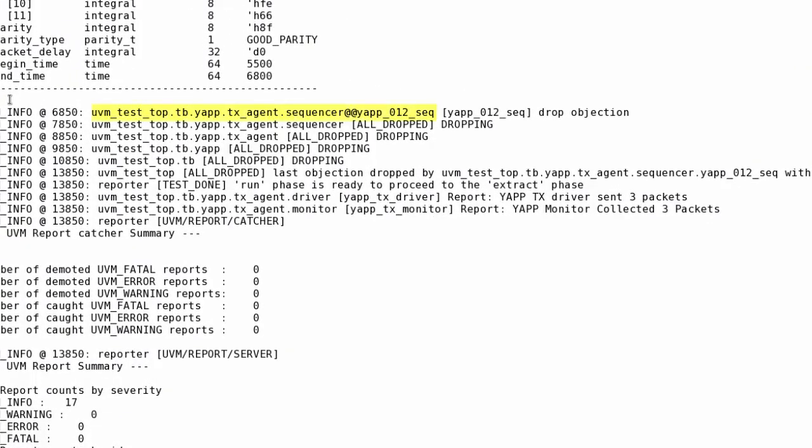we can see that the last objection is dropped by the YAP012 sequence running on the sequencer in this path. The objection drop triggers the all_dropped execution in the objection propagation path, i.e., sequencer, agent, YAP UVC and testbench, but not the driver or monitor.